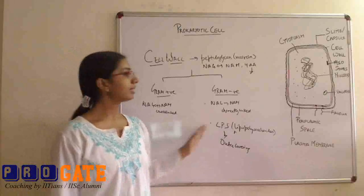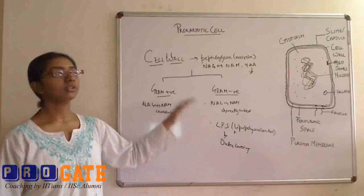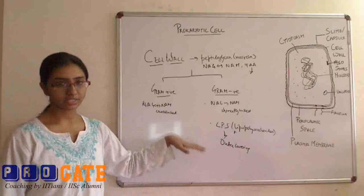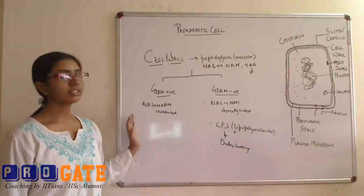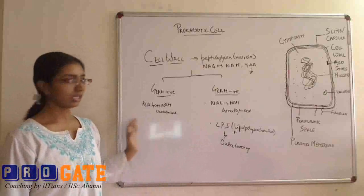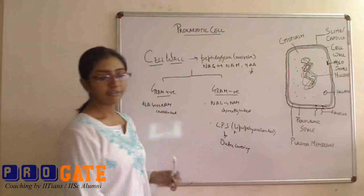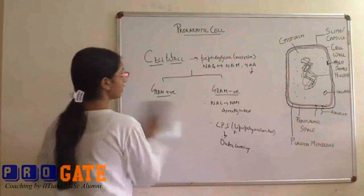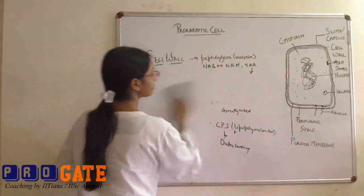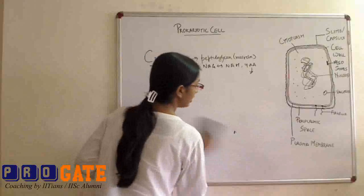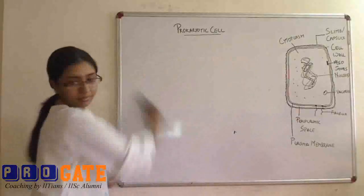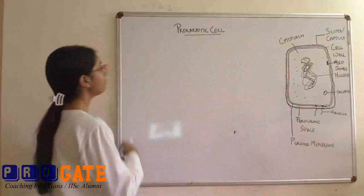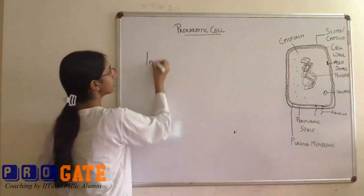So that's why in gram-negative bacteria, we get a negative test, that is we get a pink colored colony like we studied earlier, and in gram-positive bacteria, we have the violet color colonies. So apart from cell wall, we have various other structures that are present inside the bacterial cell. These structures include basically the internal membranous systems.